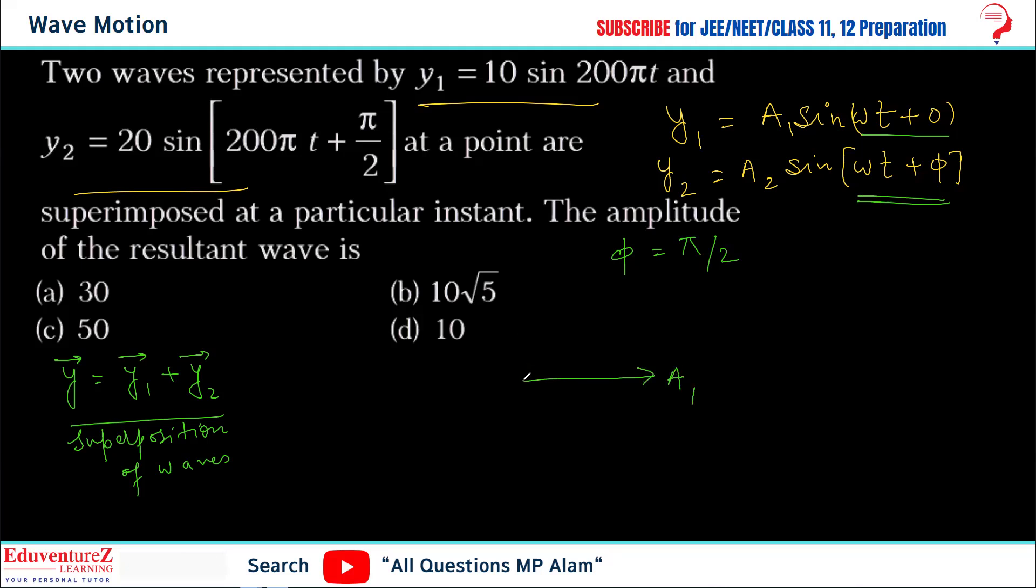That means if we draw a1 in this direction, then we have to draw a2 at what angle difference, at π/2. a2 will be drawn here. So if you need the net amplitude, you can see that the angle between a1 and a2 is φ, which is π/2.